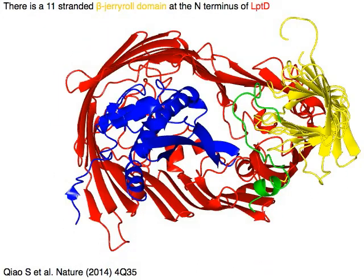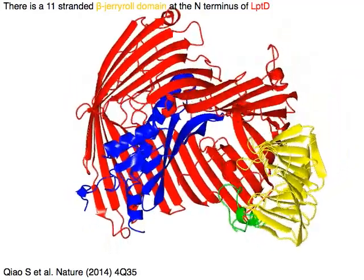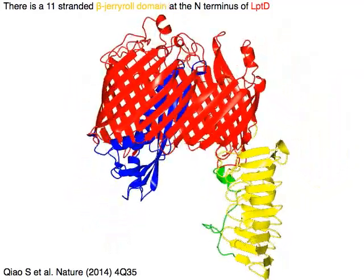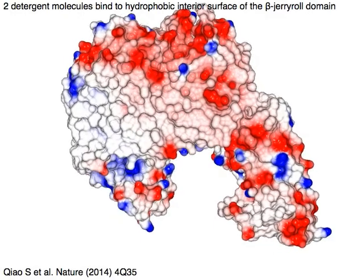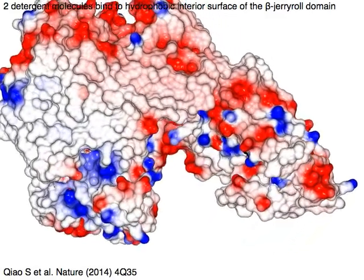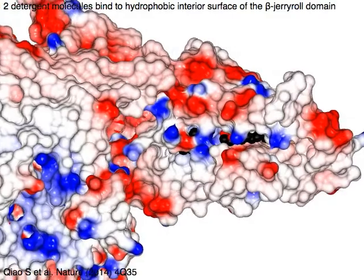There is an 11-stranded beta-jellyroll domain in yellow at the N-terminus of LPTD in red. Two detergent molecules bind to the hydrophobic interior surface of the beta-jellyroll domain.